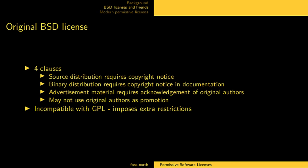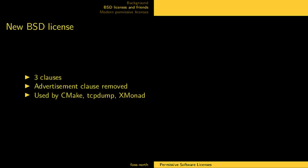This four-clause license was used for a while, but it got some criticism from the Free Software Foundation because it's incompatible with the GPL — the advertisement clause is an extra restriction compared to the GPL, and the GPL doesn't allow you to impose extra restrictions on the software. So the new BSD license, also called BSD-3-Clause, uses three clauses — the same as before except the advertisement clause is removed. This new BSD license is used by CMake, tcpdump, XMonad, and a lot of other software.